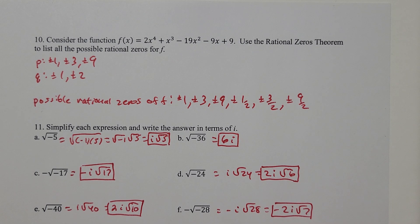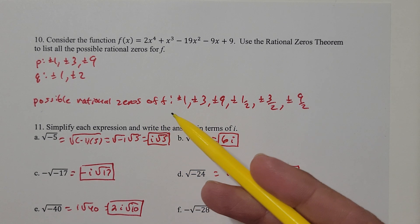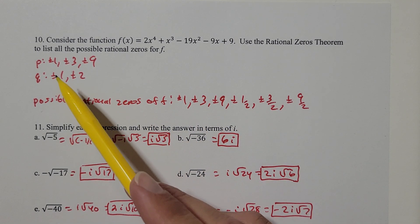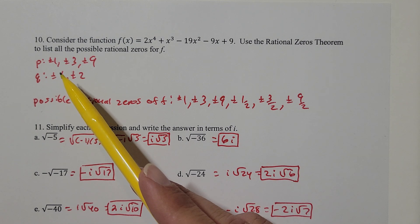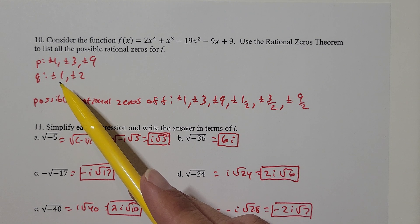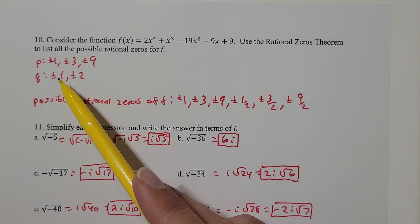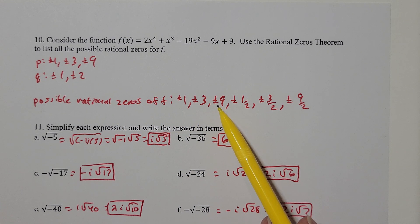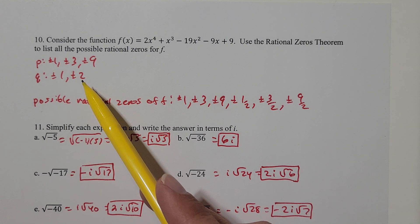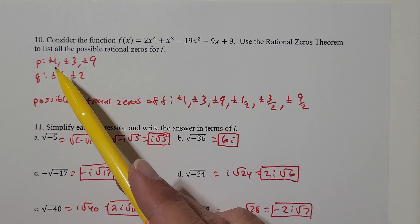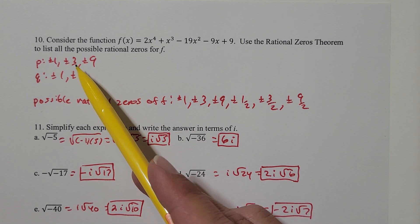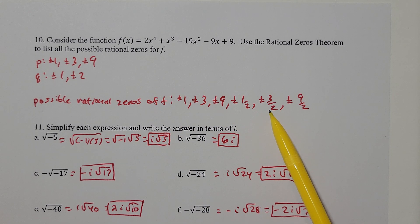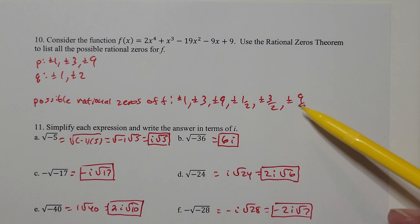Sometimes students mess this up and have those switched — don't do that, you get a wrong answer. The possible rational zeros of f are all values of the form p over q. With 1 or negative 1 in the denominator: plus or minus 1, plus or minus 3, plus or minus 9. With 2 or negative 2 in the denominator: plus or minus 1 half, plus or minus 3 halves, and plus or minus 9 halves.